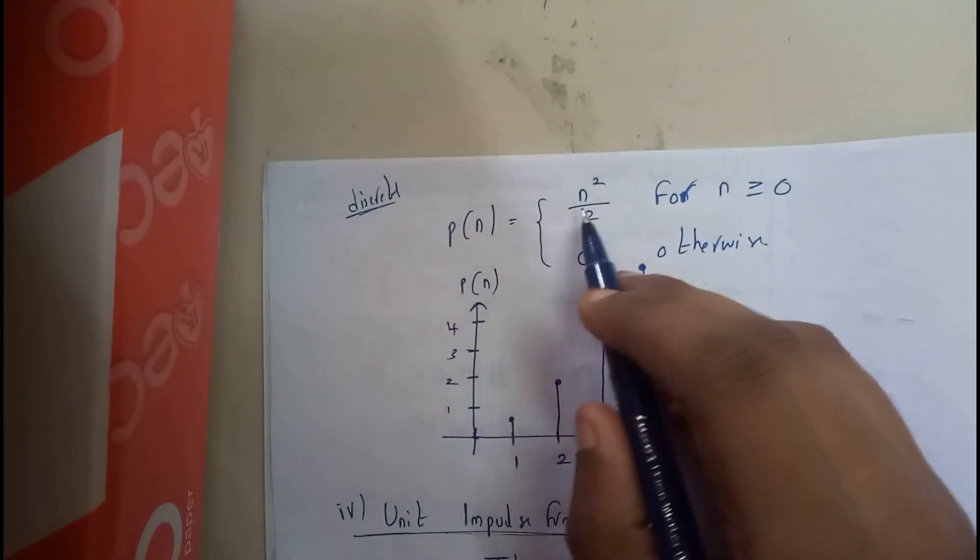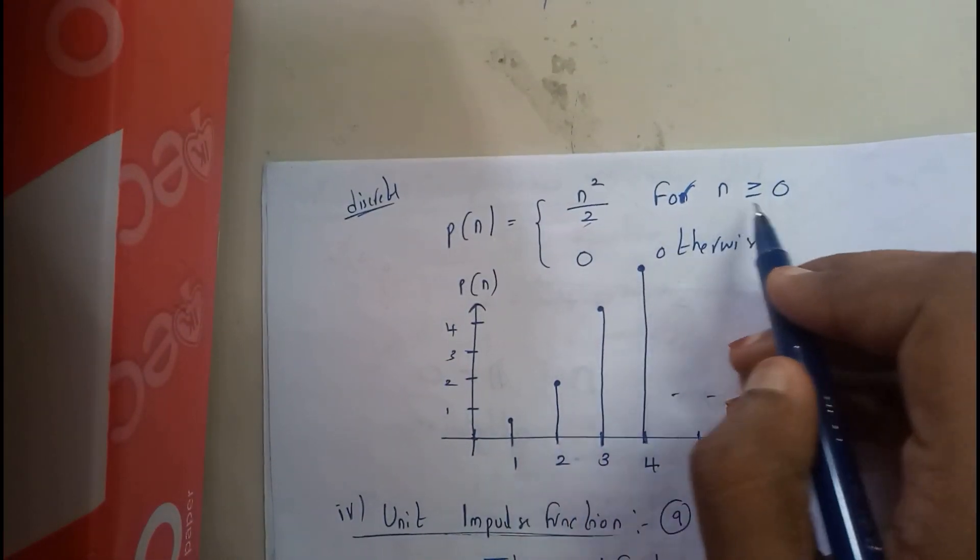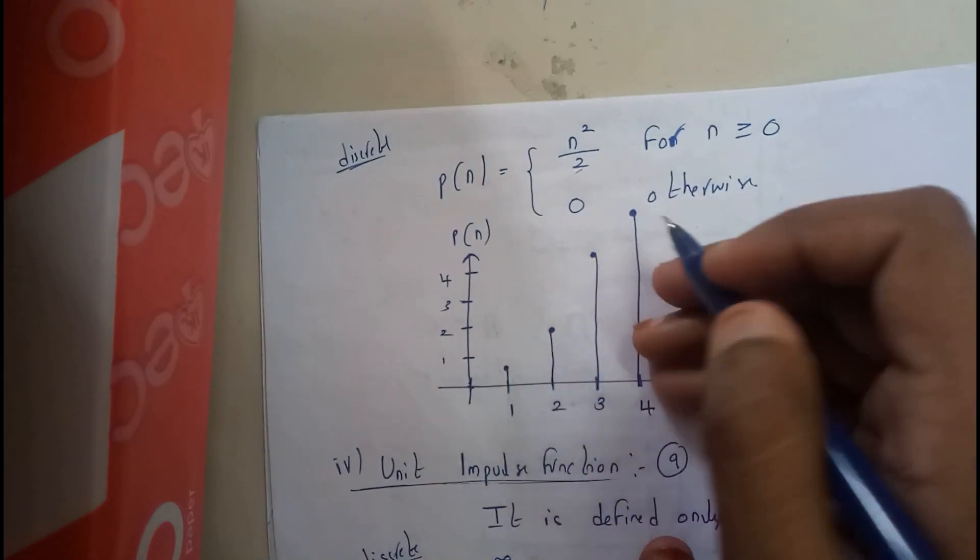In discrete, it is p of n equals n square by 2 for n greater than or equal to 0, 0 otherwise.